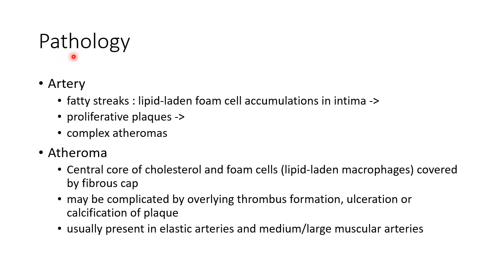Now let us see about the pathology of atherosclerosis. The artery shows fatty streaks, which are lipid-laden foam cell accumulations in tunica intima. This progresses to proliferative plaques, which progress to complex atheromas. An atheroma consists of a central core of cholesterol and foam cells, which are lipid-laden macrophages, covered by a fibrous cap.